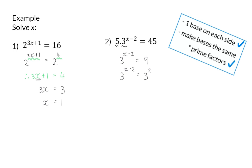So again, because the base numbers are the same, I can make the conclusion that the exponent on the left has to have the same value as that on the right, and that means that x minus 2 should be equal to 2. To solve x, I will add 2 on the right, so x will be 4.